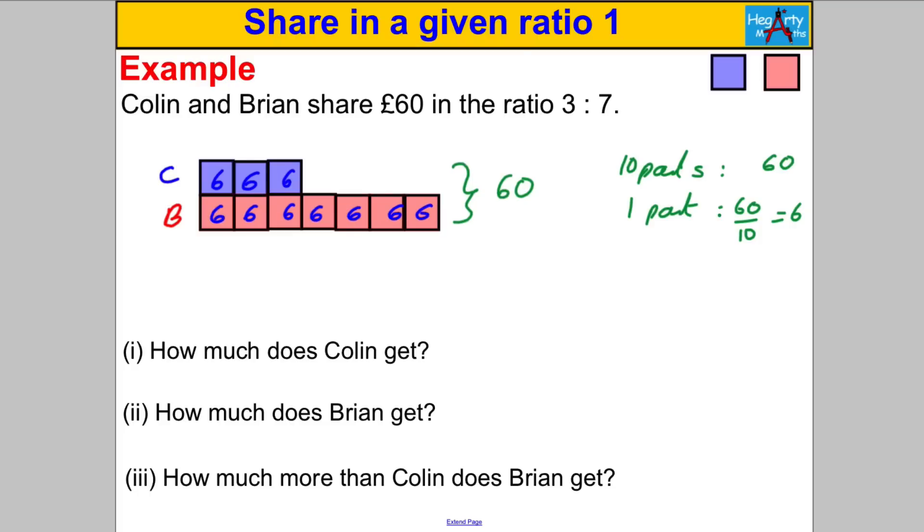And as I said before, once you've got that picture in order, any question they can ask you is sorted. Let me show you how. How much does Colin get? He gets 3 lots of 6, so 3 multiplied by 6, which is 18. Don't forget the units, 18 pounds. How much does Brian get? Well he gets 7 lots of 6, so he gets 7 times 6, which is 42 pounds. How much more than Colin does Brian get? Now Brian gets this much more, he gets 4 parts more. You can see it from the picture, so it's simply 4 multiplied by 6, which is equal to 24 pounds.